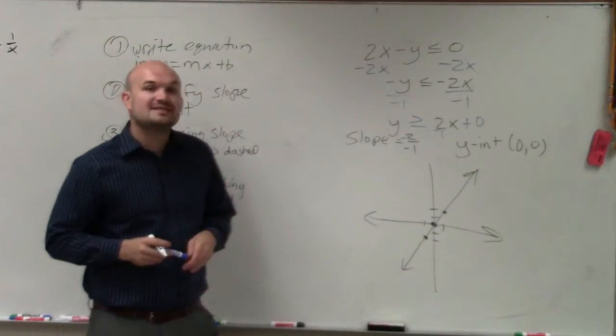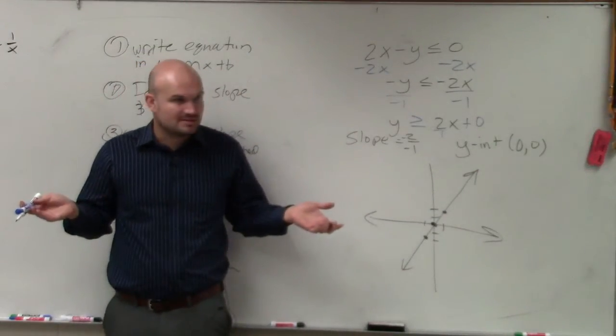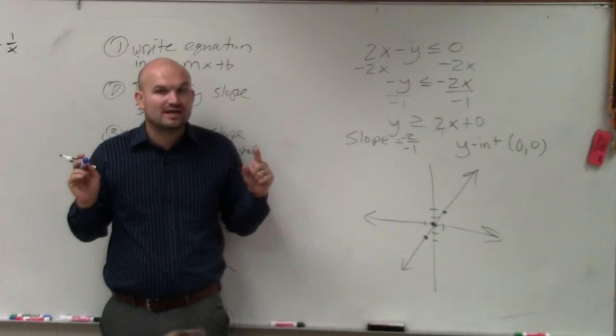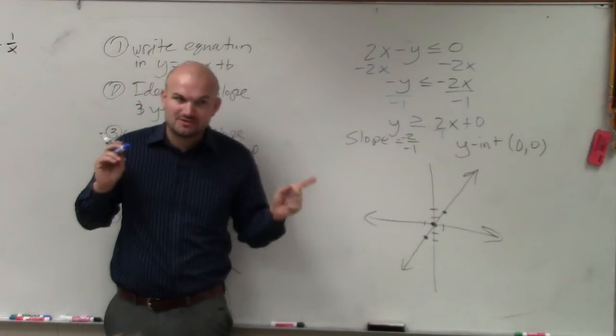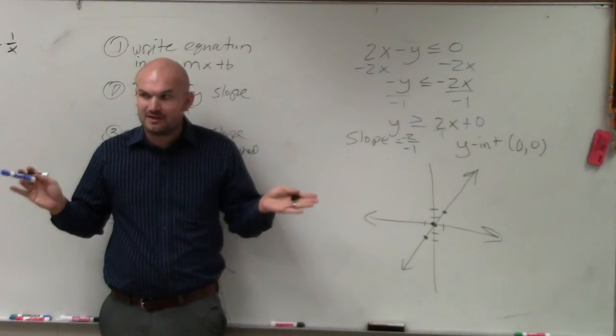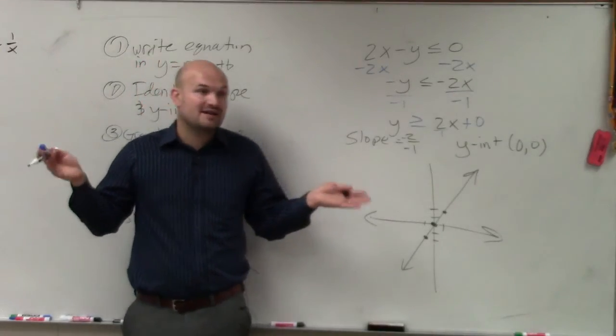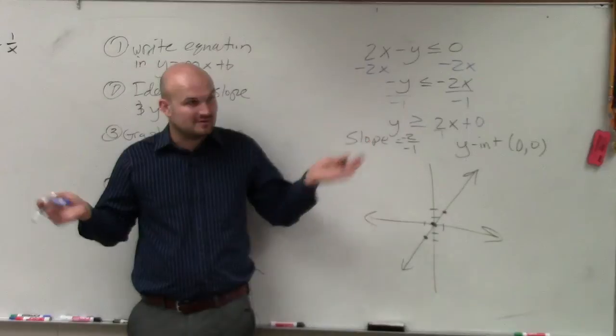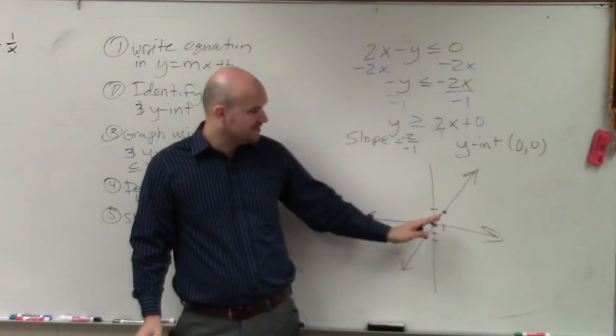And now we need to choose a test point, any test point. I would recommend, though, choosing points that are either 0s and 1s. It just makes your life a lot easier. Yes, you could pick negative 99 and positive 87, but we just want to pick points that are close to this. That would be easy.